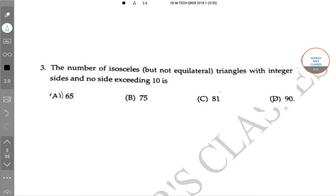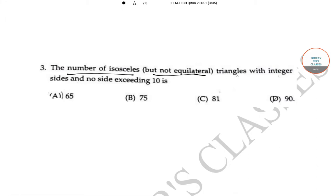Hello students, welcome to Sorosers classes. The question is, the number of isosceles but not equilateral triangles with integer sides and no side exceeding 10 is